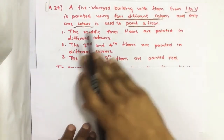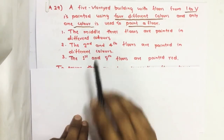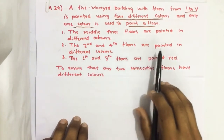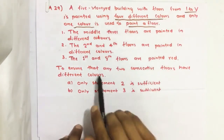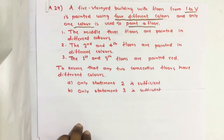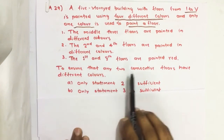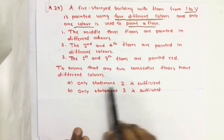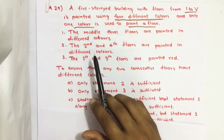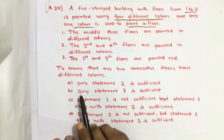Four statements are given. Statement one: the middle three floors are painted in different colors. Statement two: the second and fourth floors are painted in different colors. Statement three: the first and fifth floors are painted red. Now, to ensure that any two consecutive floors have different colors, which of the following statements is or are sufficient?